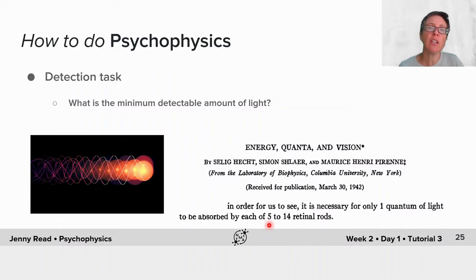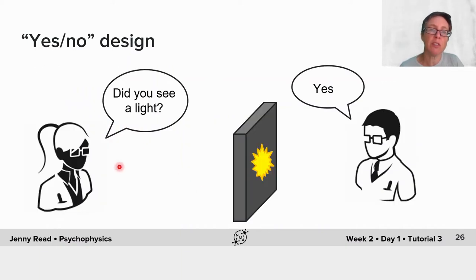If you were designing an experiment like this, you might think of a design as follows. On each trial, you would flash up a certain amount of light, sometimes a bright flash, sometimes a dim flash. After each flash of light, you would ask the subject, did they see the light or not? That would be a yes-no design.